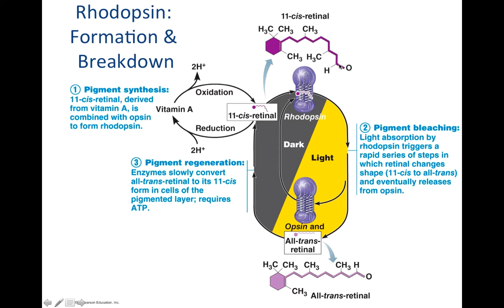So when retinal absorbs light, it takes on this trans conformation. And remember that retinal can go back to its cis conformation and rejoin with its opsin, but it is going to have to happen in the dark.